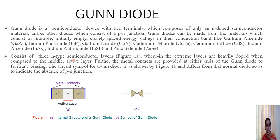The Gunn diode consists of three N-type semiconductor layers. The extreme layers are heavily doped compared to the middle active layer and are used for providing metal contacts at either end to facilitate biasing. The circuit symbol of the Gunn diode differs from the normal PN junction diode — there is no PN junction, as the Gunn diode is made entirely from N-type semiconductor material.